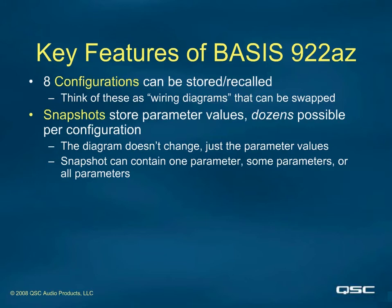Because of this, each config can contain dozens, if not hundreds, of snapshots. There is a defined upper limit of 499 snapshots per config, but most systems to date have rarely needed more than a couple dozen or so.